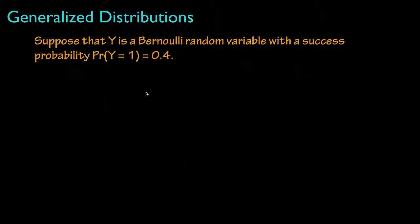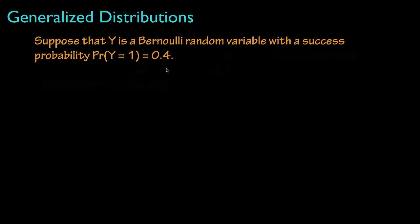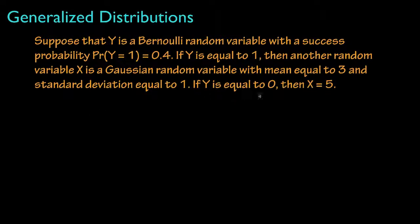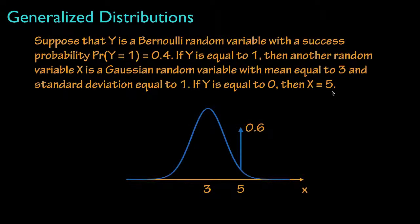As a specific example, let's suppose that y is a Bernoulli random variable with a success probability such that the probability that y equals 1 is equal to 0.4. If y is equal to 1, then x is a Gaussian random variable with a mean equal to 3 and a standard deviation equal to 1. And if y is equal to 0, then x takes the value 5. The density for this situation has a Gaussian density centered at 3, scaled by 0.4, and a single Dirac delta function located at 5, scaled by 0.6.